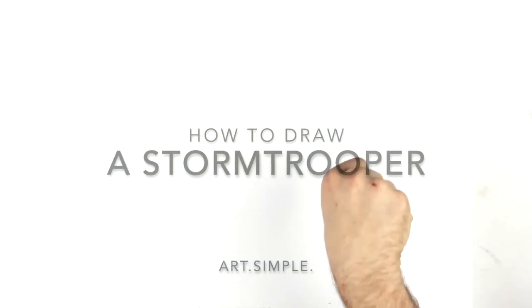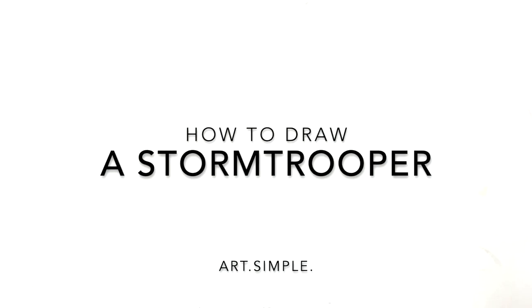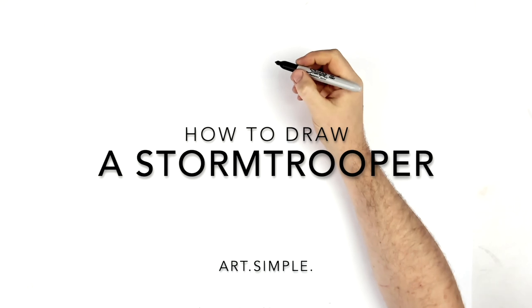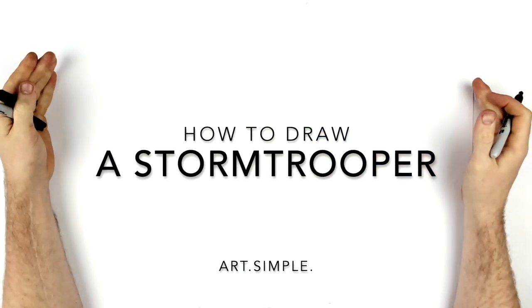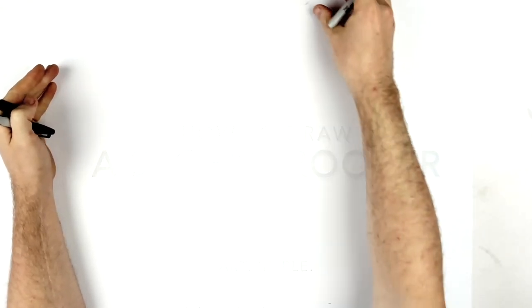What's up everybody, welcome back to another drawing tutorial. Today we're going to be doing a Stormtrooper, particularly a First Order Stormtrooper, one of the newer styles. So I'm on a landscape page, use a pencil and eraser for these. Sketch them out lightly, you can always do your ink on top of pencil, but you can't erase ink.